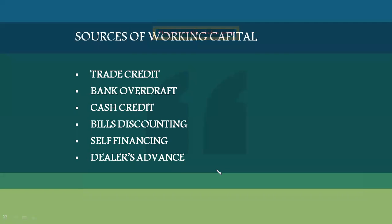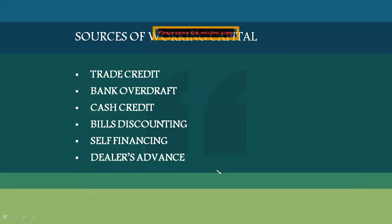Sources of working capital include: trade credit, which is a very common and convenient source — credit is extended for 30 or 60 days from suppliers or dealers. Bank overdraft is an agreed credit term between the entrepreneur and the bank, allowing withdrawal for 6 to 12 months for immediate cash needs. Cash credit is similar but based on hypothecation, where inventories and books are kept as security.